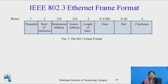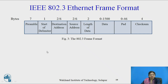The next very important topic is the frame format of IEEE 802.3. When the source transmits data to the destination, the data link layer provides the proper frame format — that is, a required structure. IEEE provides a proper frame format with specific fields. Let's see each and every field one by one.